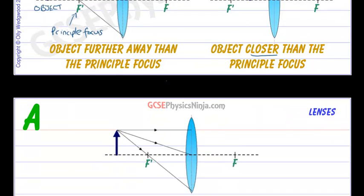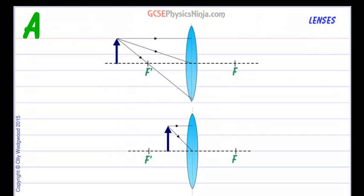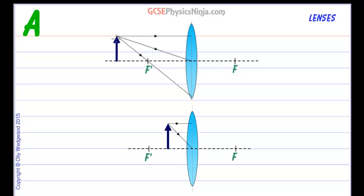So let's dive into the first case. So we know that any ray that is parallel to the principal axis, which is this dotted line that goes through the center of the lens, then that ray will be converged through the principal focus on the other side.